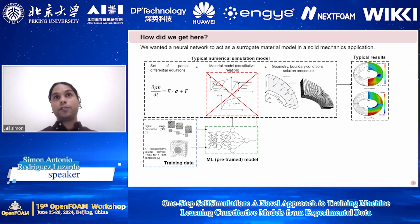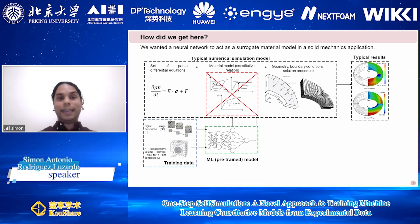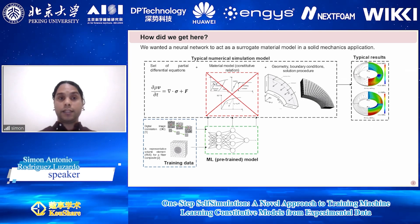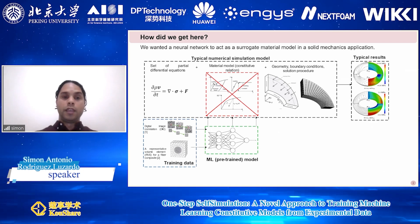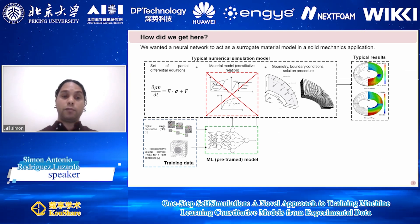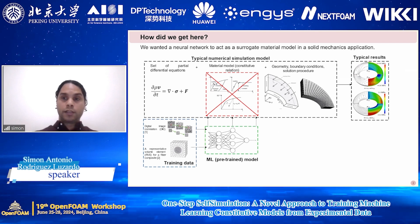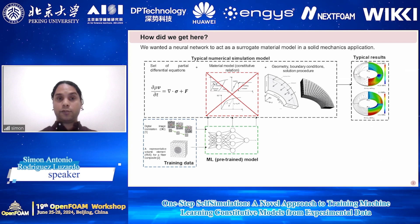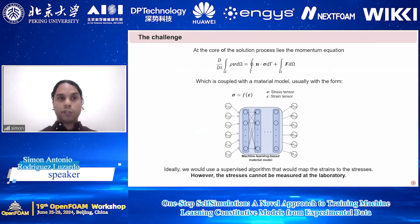This introduces uncertainty in the simulations. What we want to do is eliminate or at least reduce the uncertainty associated with the assumed material model. We are aiming to do this by replacing the assumed material model with a machine learning model that will be trained directly from experimental results.